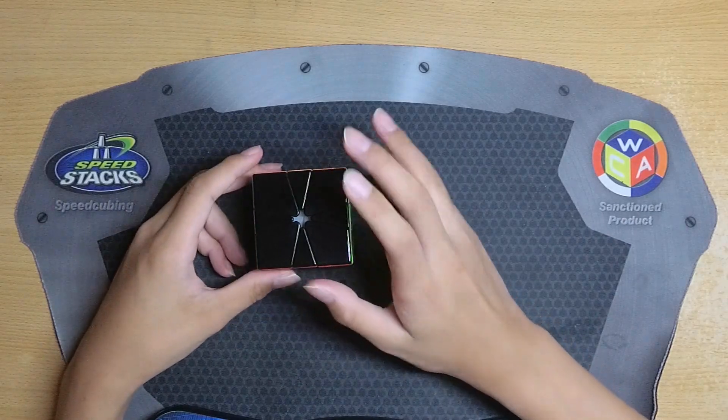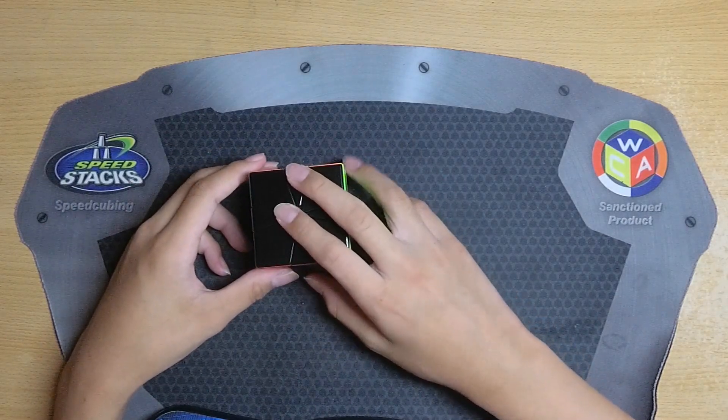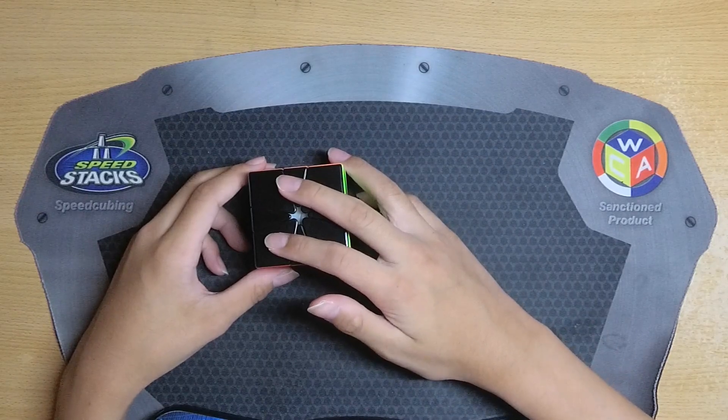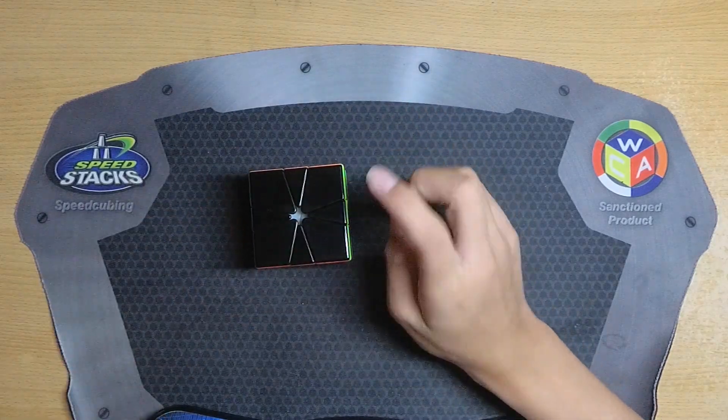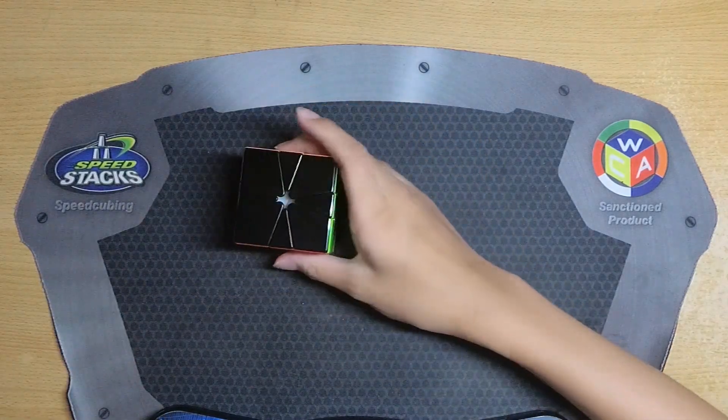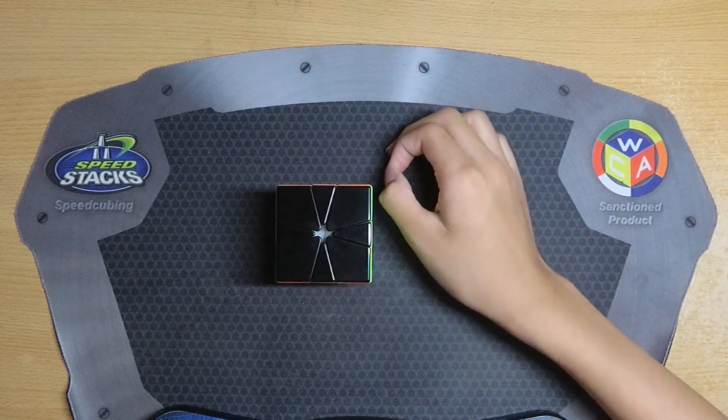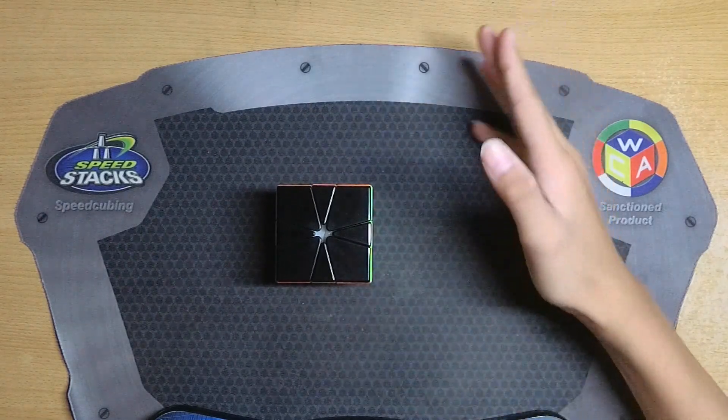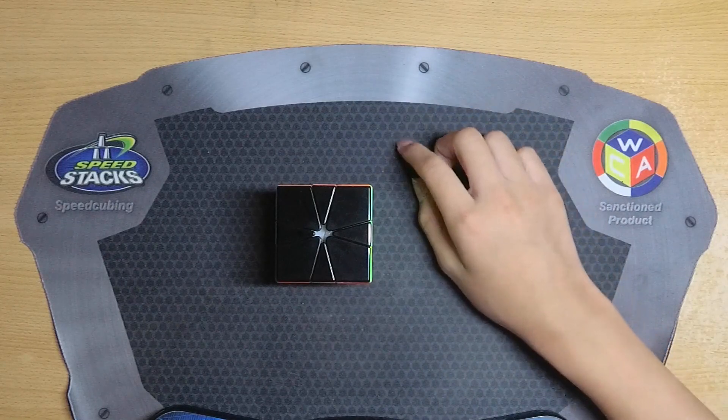This was a 23 slice solution which could have been a lot less. It was a 6.61 meaning it was 3.48 slices per second, which is once again pretty nice turning. Although I could have been more efficient, it was a pretty nice solve.